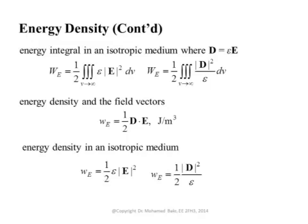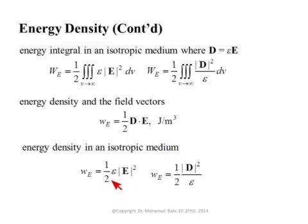Replacing E by D/ε gives W = ½ ∫ |D|²/ε dv. So there are three equivalent forms for the electric energy: one half the integral of D·E, one half the integral of ε|E|², or one half the integral of |D|²/ε. Since we integrate over volume to get total energy in joules, the integrand has units of joules per meter cubed, which we call the electric energy density: ½ D·E, or ½ ε|E|², or ½ |D|²/ε — all three are identical.